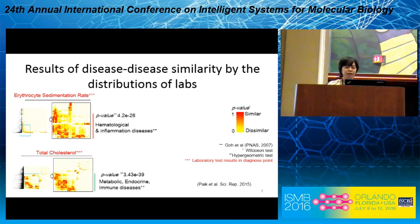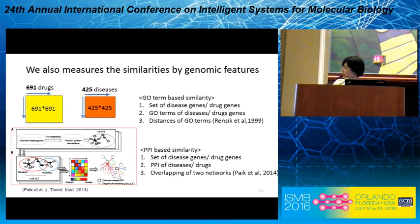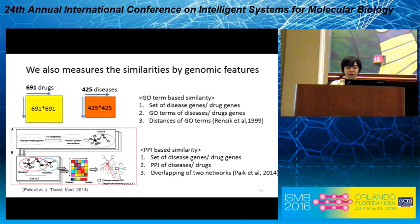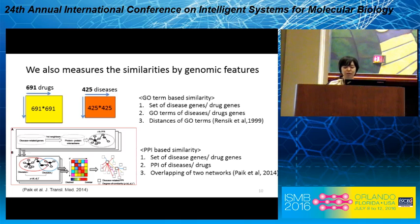We also confirmed the same trend already exists in the drug-related labs. In addition, we define the genomic similarity between drug-drug and disease-disease pairs. Due to the limitation of presentation time, I will briefly introduce the genomic part of my work. We determine a set of genes associated with each term using GWAS papers. PPI similarity method was also used based on my previous work, measuring the degree of overlap between two networks.